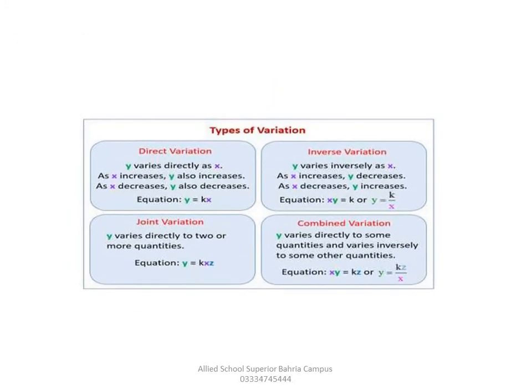Next, let's see the types of variations. The definition of ratio is the comparison of same or homogeneous quantities. We have 4 main types of variation.